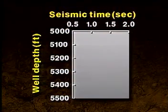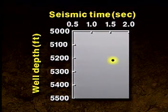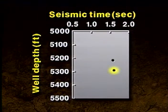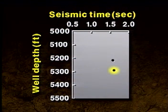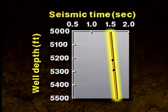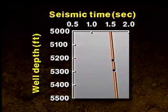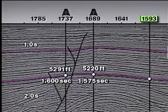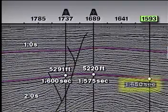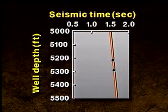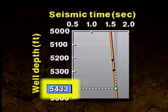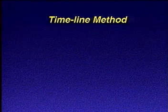To calculate the depth, first we plot the two data points: 5,220 feet at 1.575 seconds and 5,291 feet at 1.600 seconds. We define the timeline by statistically fitting a curve to the time-depth data — in this case, a straight line. On the seismic section, we measure the time to the interpreted horizon at shot point 1593 as 1.650 seconds. Using the timeline graph, we plot the time of 1.650 seconds and determine the corresponding depth to be 5,433 feet.